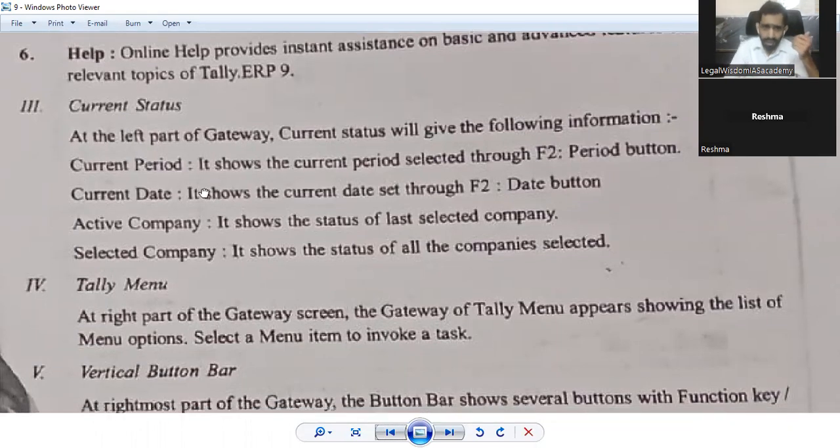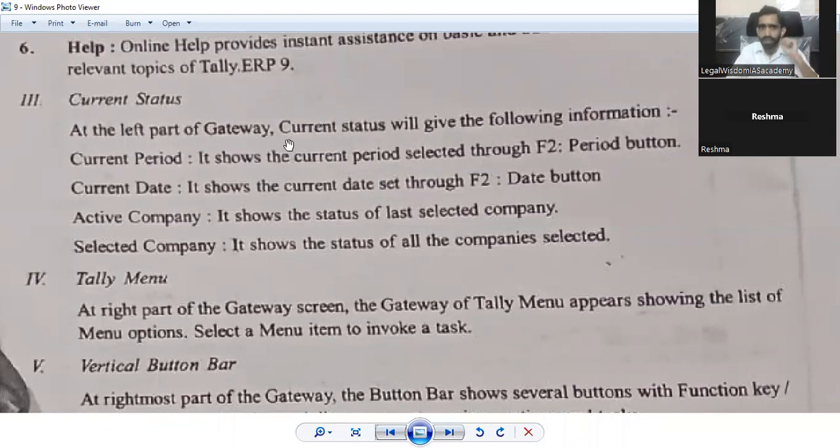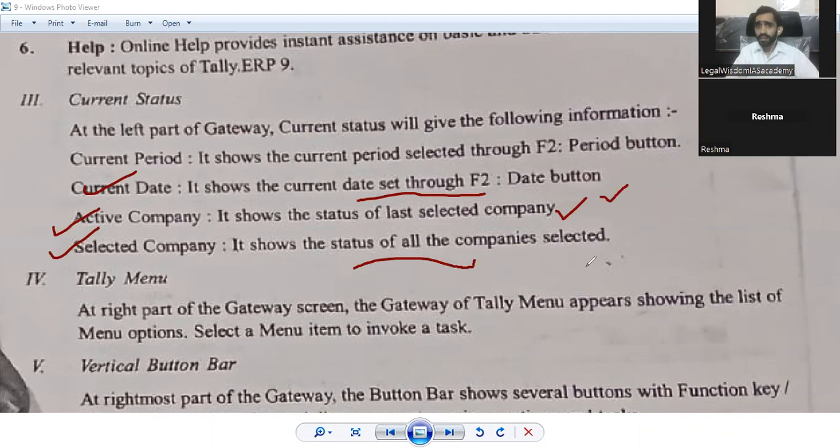Third one, what is the current status? At the left part of the Tally gateway, the first screen that opens, current status will give the following information. Current period - it shows the current period, select through F2, that is the period button. Please remember F2. Then current date - it shows the current date set through F2, the date button. Active company - if you have different companies' data in one Tally software, at present which company you are reviewing, that company is known as active company. It shows the status of last selected company. Selected company - it shows the data of all the companies selected. You can select one company or different companies.